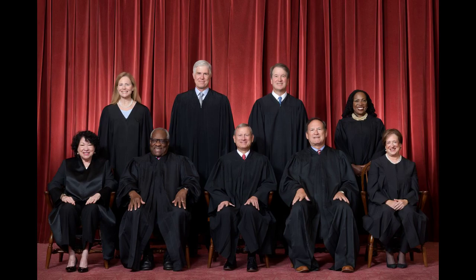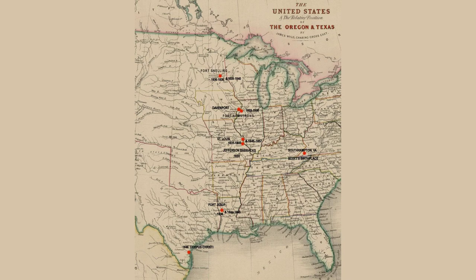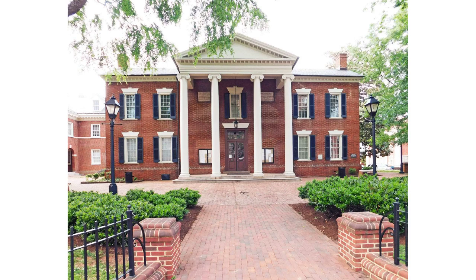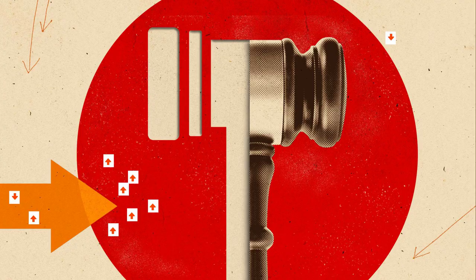The Dred Scott Decision. In 1857, the Supreme Court's ruling in the Dred Scott case further deepened the divide. The Court declared that enslaved individuals were property and not entitled to citizenship, effectively nullifying any potential restrictions on slavery.